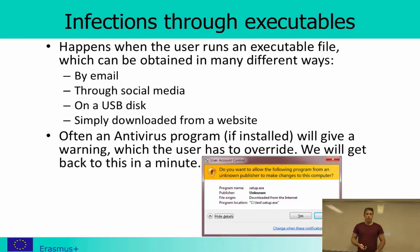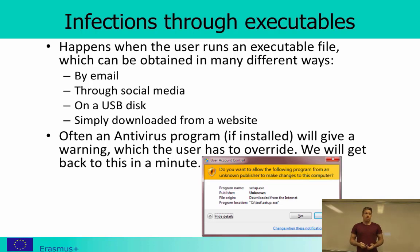Then you have infections through executables — files that you download or receive in different ways: by email, through social media, on a USB disk, or simply downloaded from a website. If you have an antivirus program installed, it will often give you a warning. But the problem is that users tend to overwrite these warnings, partly because the information they receive is not sufficient for them to make a decision.